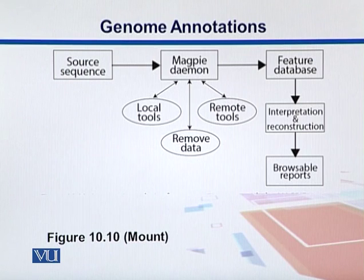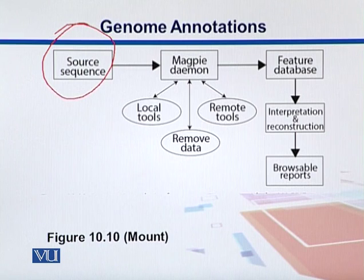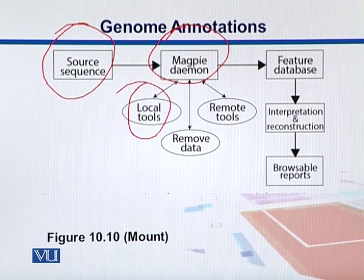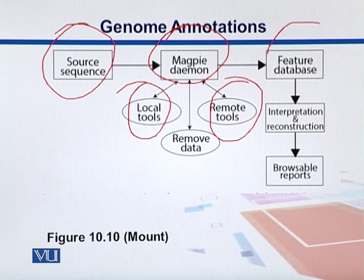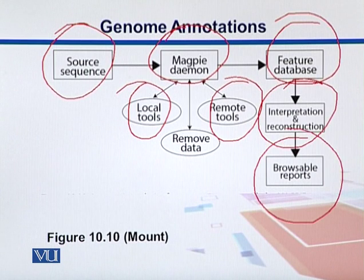Here we have an outline — a workflow of how MagPi works. We take a source sequence and give it to the MagPi daemon software program. It takes those sequences added to the databases, automatically retrieves them, and sends that data to some local tools and some remote tools over the internet. It then explores specific features or annotation patterns and puts them into its feature database. Those results are interpreted and we get the reports. It is essentially an automated annotation gathering tool.